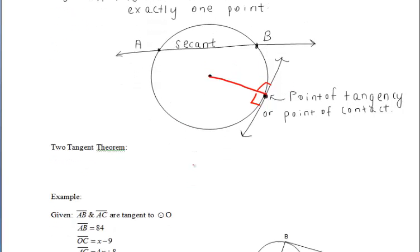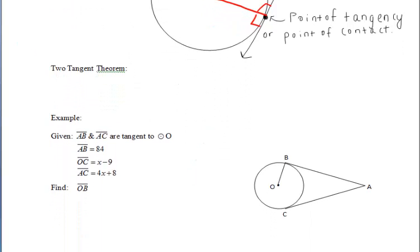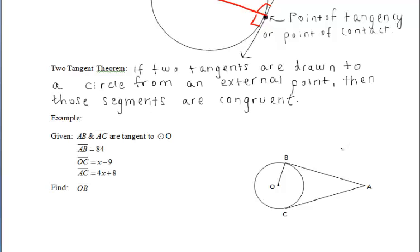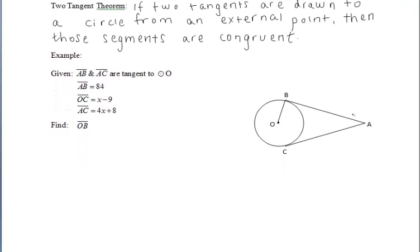Let's talk about the two tangent theorem. The two tangent theorem states that if two tangent segments are drawn to a circle from an external point, then those segments are congruent.